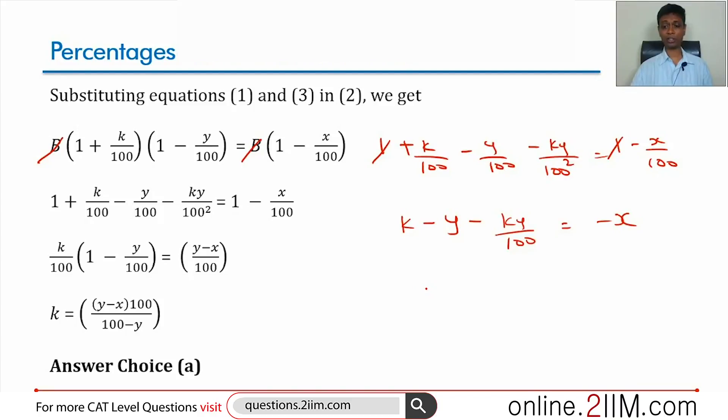We need to express everything in terms of k. Can we say k into 1 minus y by 100 equals y minus x. Or k is y minus x into 100 by 100 minus y, which is nothing but answer choice A.